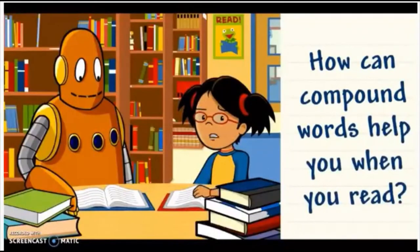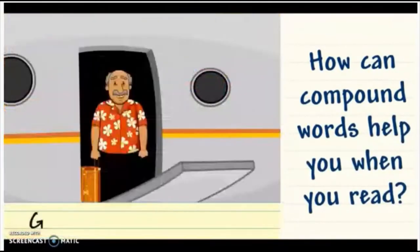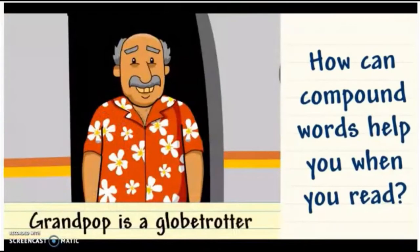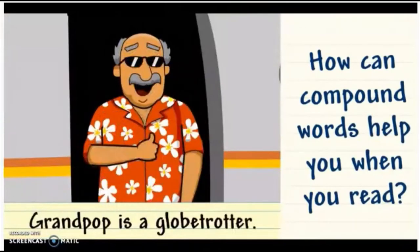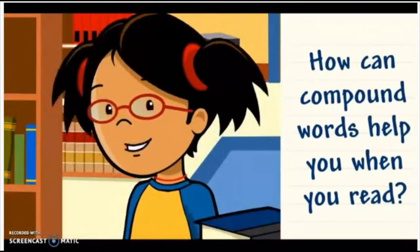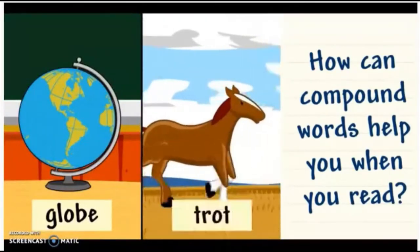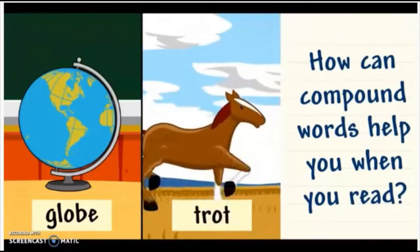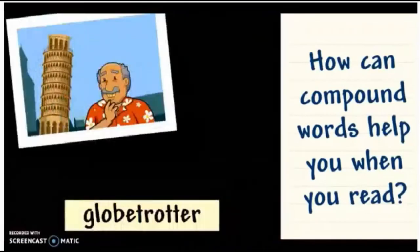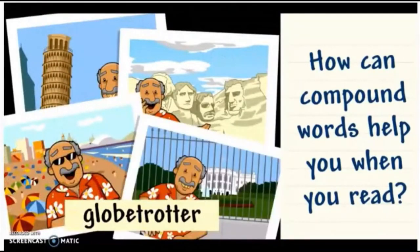How can compound words help you when you read? Sometimes when I read, I get to a word that I don't know. Grandpop is a globetrotter. What does globetrotter mean? Break apart the word to help you figure it out. I know that a globe is a model of Earth. And when a horse trots, it jogs or runs slowly.